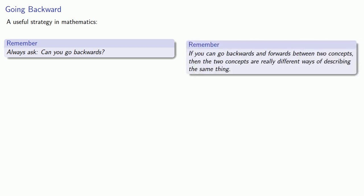Now let's introduce a useful strategy in mathematics. Always ask, can you go backwards? Now, the reason this is useful is that because mathematics is so useful that different people will invent different mathematics for their own purposes. But if you can go backwards and forwards between two concepts, then the two concepts are really different ways of describing the same thing.